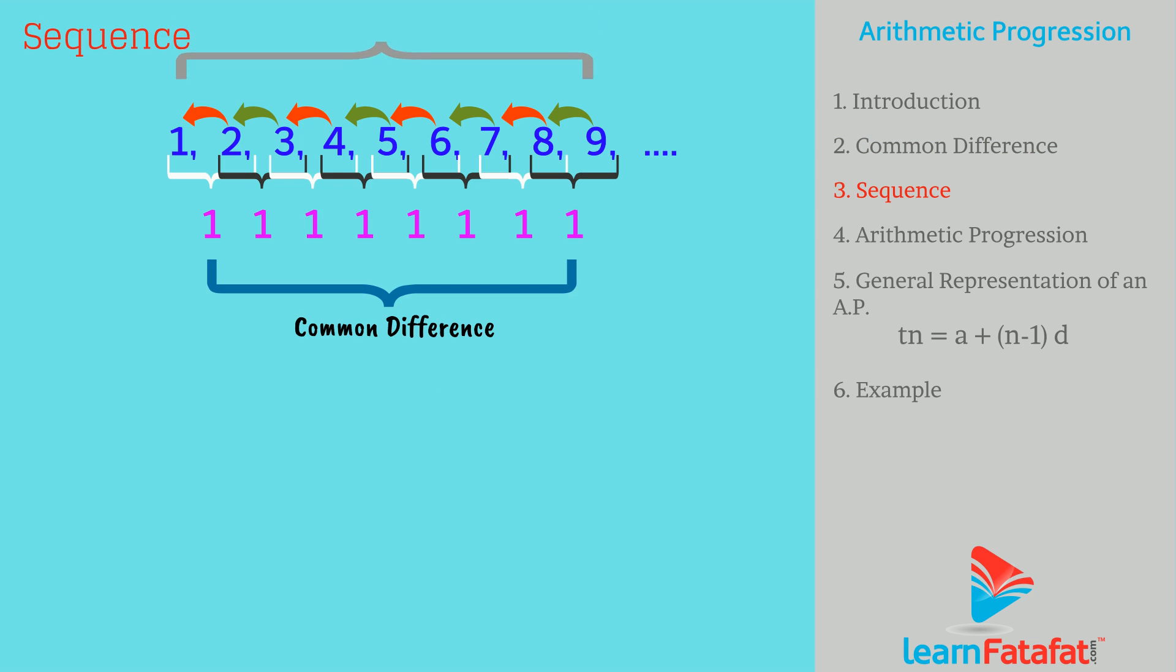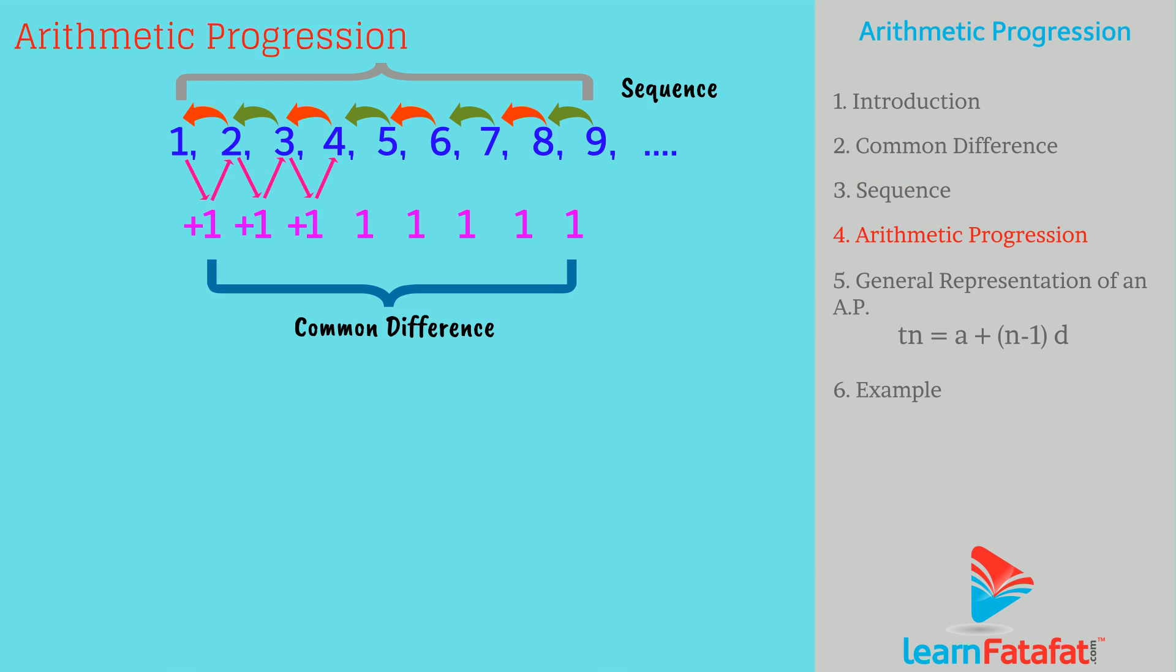Dear students, such group of numbers in which the numbers, that is terms, are arranged according to certain rule is called a sequence. And if in such sequence, the next term is obtained by adding a fixed number to previous term, then such sequence is called arithmetic progression.